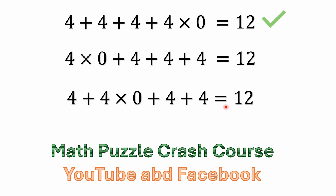Think of it this way: when you go to a grocery store and you're checking out at the cashier — or the self-checkout — does it matter what order the cashier scans your items? You could think of each 4 as 4 times 1, like four $1 items you're purchasing. It doesn't matter the order they're scanned; your price will still be $12. That's why it doesn't matter what order the terms are written — multiplication still has precedence.